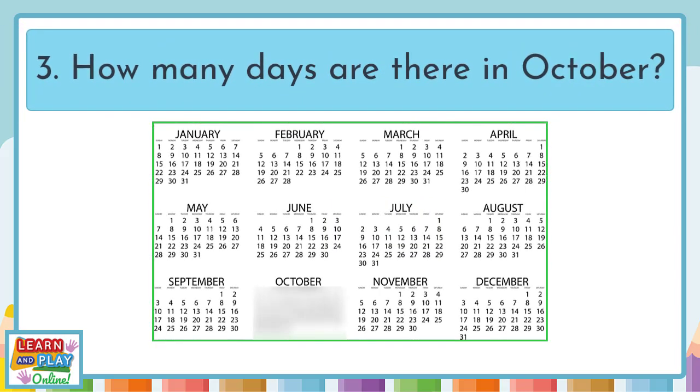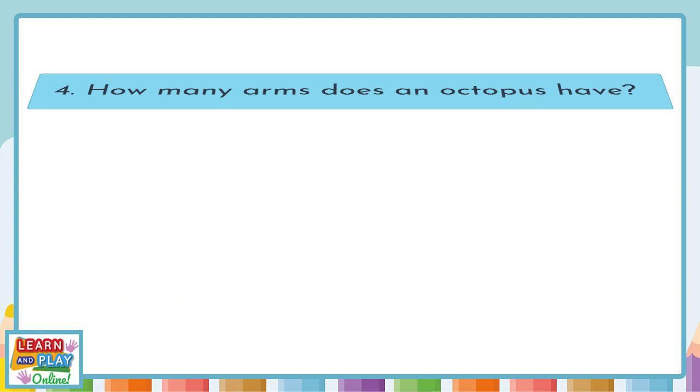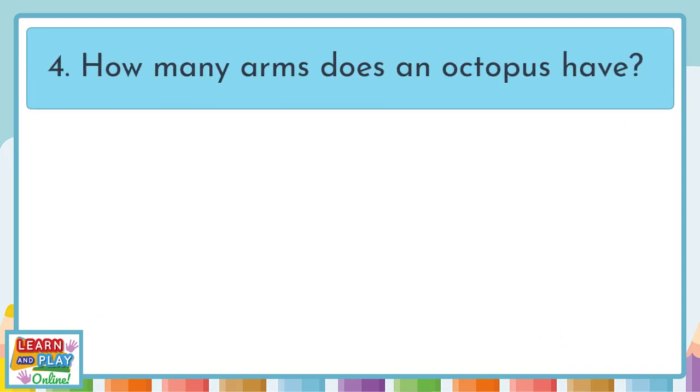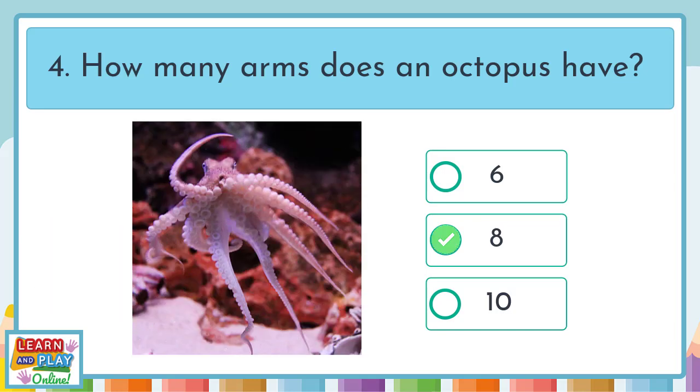Question three: How many days are there in October? 31. Question four: How many arms does an octopus have - six, eight, or ten? It has eight arms.